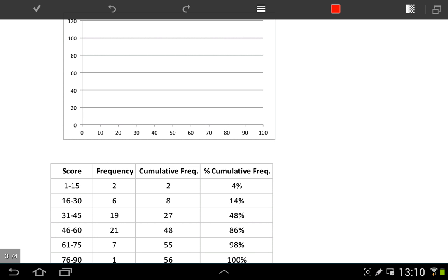We've got our axis here with a relevant scale. We have our table of results underneath it. First thing we have to do is label our axis. On the y-axis going up and down here, we need to have percentage cumulative frequency. And on the x-axis, we need to have our score.